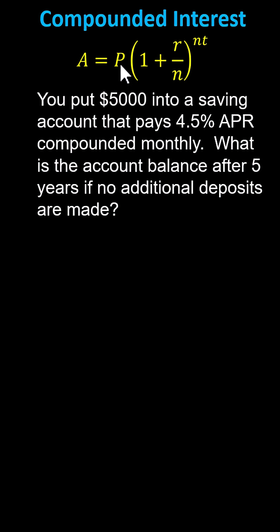In our case, the principal P is 5,000, R is 4.5% as a decimal, which is 0.045. Because the interest is compounded monthly and there are 12 months a year, N is 12, and because the time is 5 years, T equals 5, which gives us A equals 5,000 times the quantity 1 plus 0.045 divided by 12.